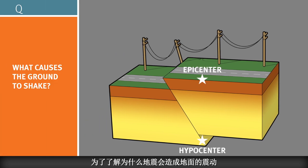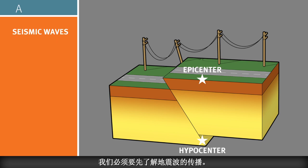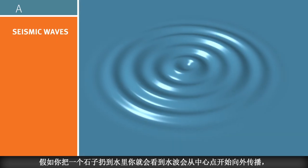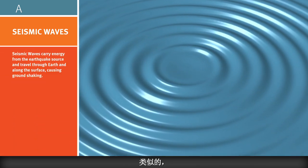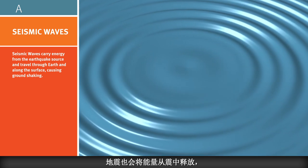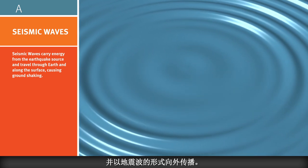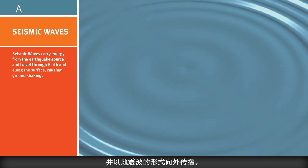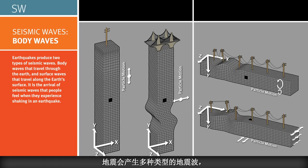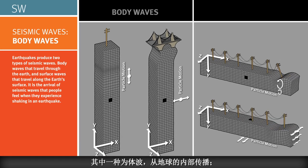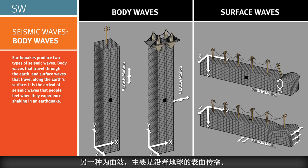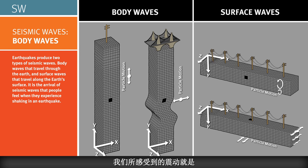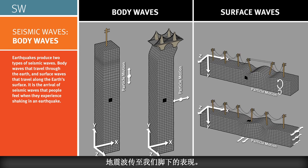To grasp what causes the ground to shake, we need to understand the propagation of seismic waves. Just as throwing a rock into a pond causes radiating ripples, rupturing of a fault in an earthquake causes a transmission of energy in the form of seismic waves traveling away from the hypocenter and epicenter. Earthquakes produce many types of seismic waves. Body waves travel through the Earth, and surface waves travel along the Earth's surface. It is the arrival of seismic waves that people feel when they experience shaking in an earthquake.